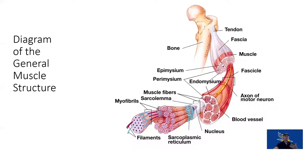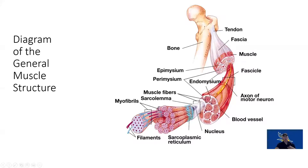Looking at it from a general visual point of view, we have individual actin and myosin filaments, bundled together within the myofibrils, which have all sarcomeres aligned — you can see those striations right here. Those are bundled together to make a muscle fiber. So we have filaments, myofibrils, muscle fibers, fascicles, which are groupings of muscle fibers. Right here we can see our whole fascicle, which is our bundle of muscle fibers, into the muscle belly itself.